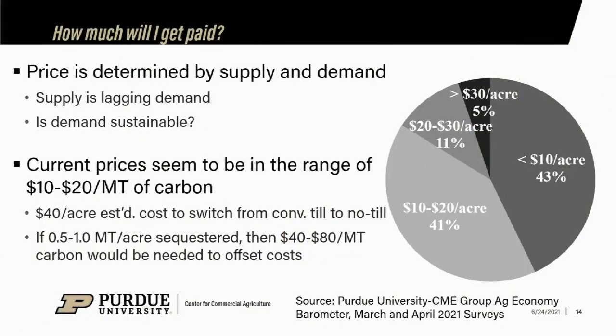We asked about the prices being offered on the barometer survey in March and April. Those who had discussed a potential contract were asked what prices they were being offered. About 40% were offered less than $10 an acre, and another 40% between $10 and $20. That puts 84% below $20 an acre, with about 15-16% above that and a very small group above $30 an acre.